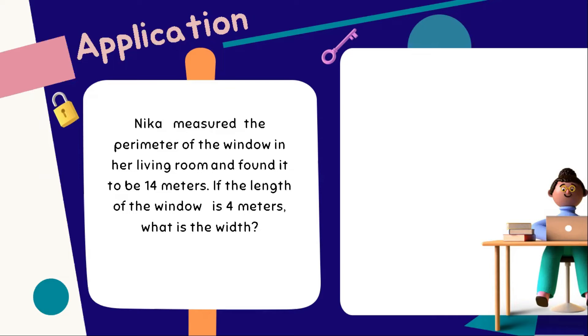To visualize our story problem, let us have an illustration. Let's assume that this rectangle is the window, and it has a length of 4 meters, but the width is still unknown. That is what is asked in this given word problem. For our first step, we can identify first the total length of our window by the given data. So, we can multiply 4 meters by 2, and therefore it has lengths of 8 meters.